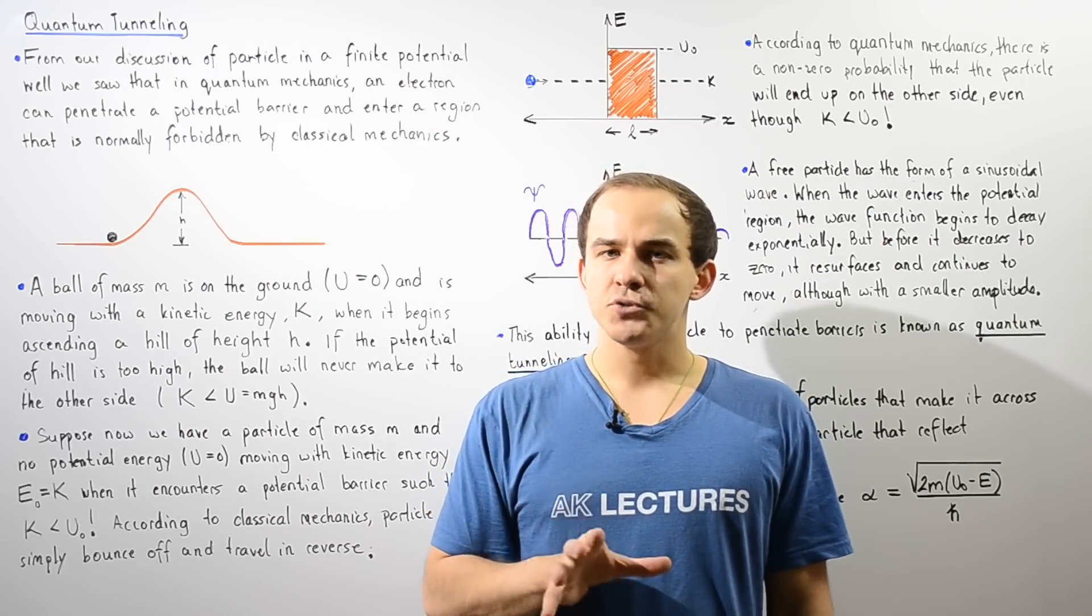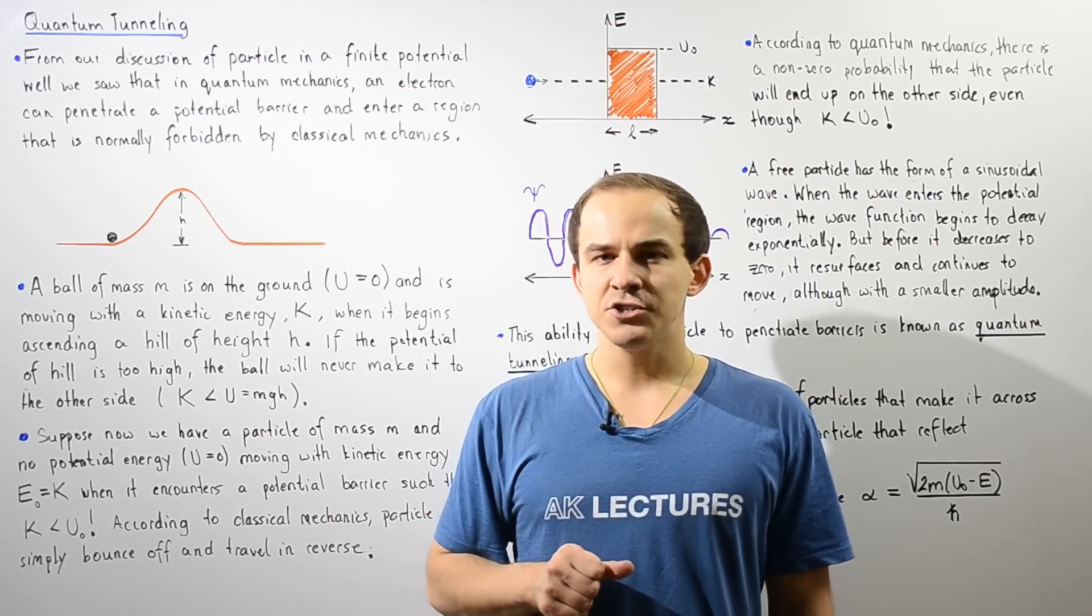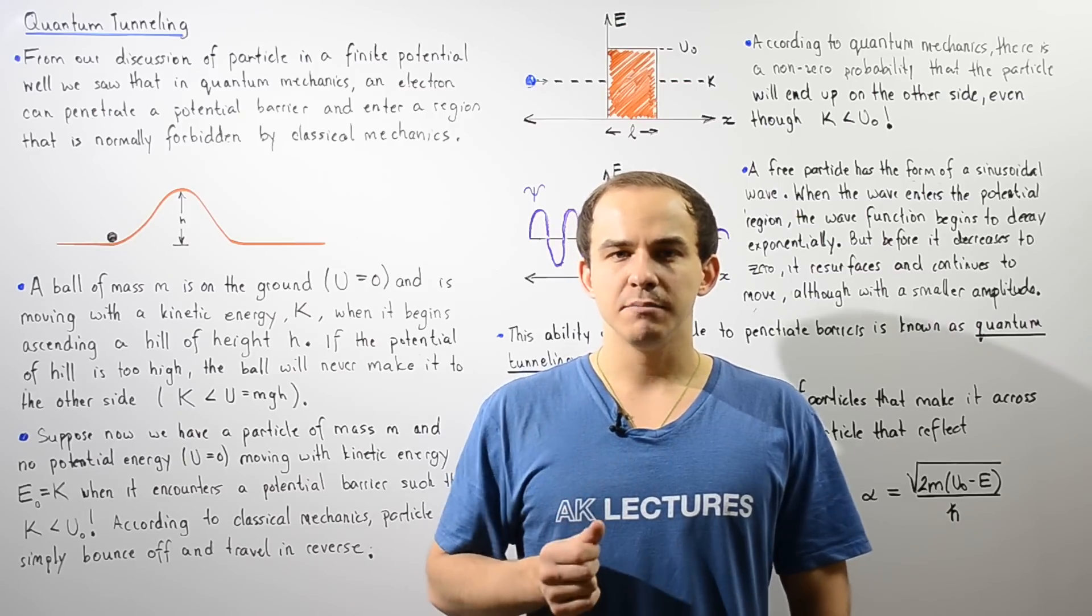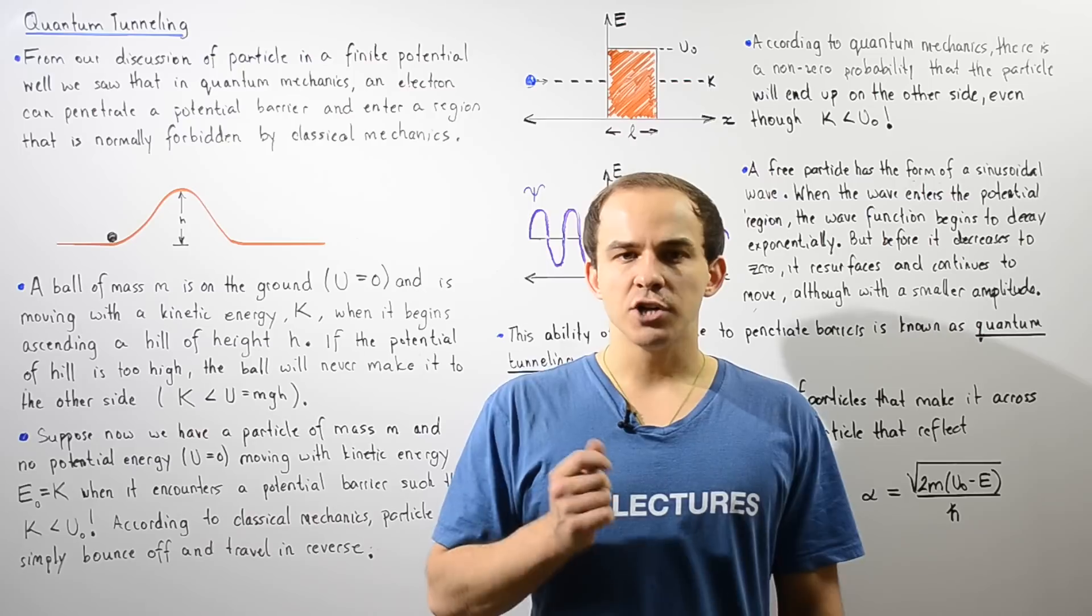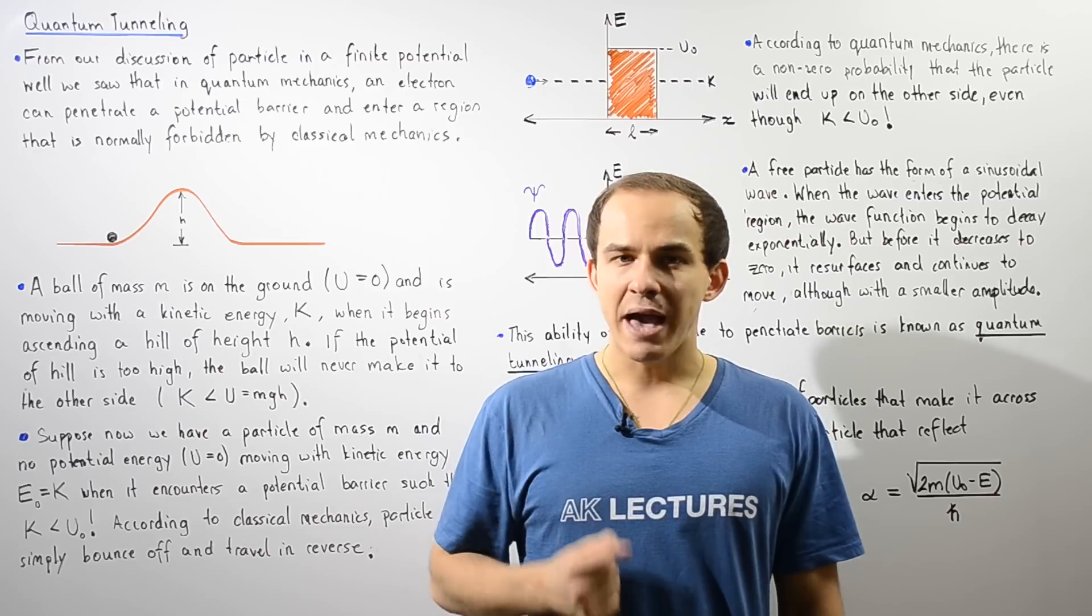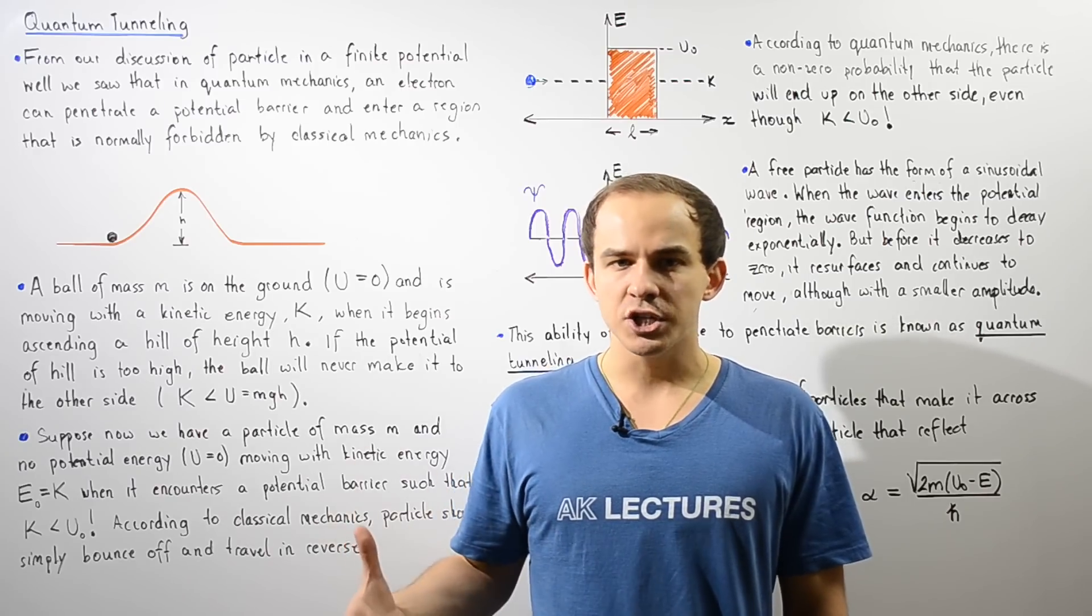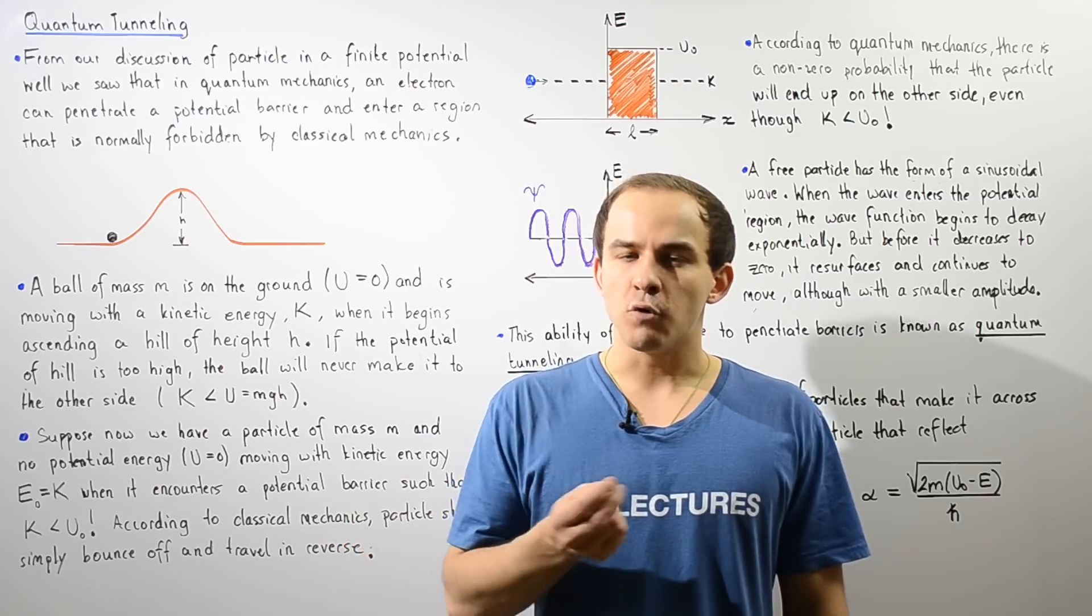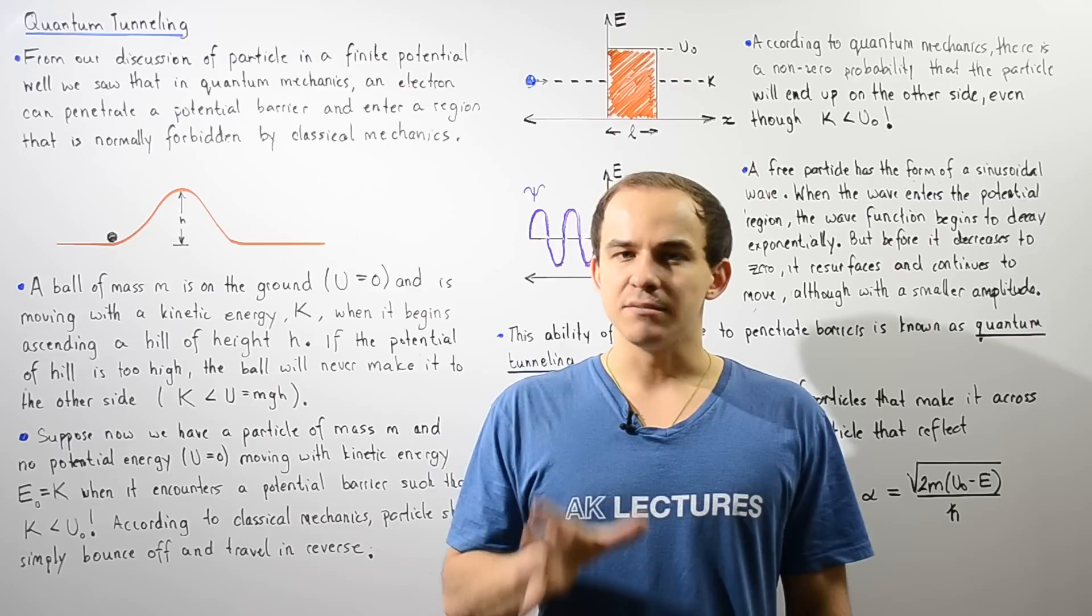In our discussion on objects moving inside finite potential wells, we said that in quantum mechanics a particle such as an electron can actually penetrate a potential barrier and end up in a region that is normally forbidden by classical mechanics.